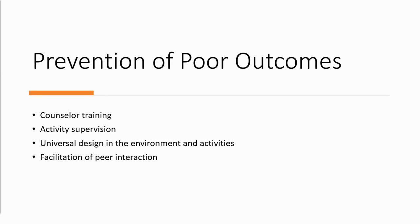To prevent those poor outcomes, steps that could be taken include implementing good counselor training, supervision during activities to monitor peer attitudes and actions, universal design in the environment and activities which we'll talk about in a later video, and the facilitation of peer interaction by counselors and other staff present. The next video will talk about how inclusion can be implemented and what it may look like.